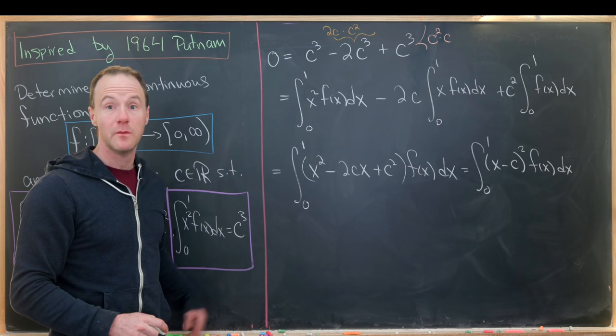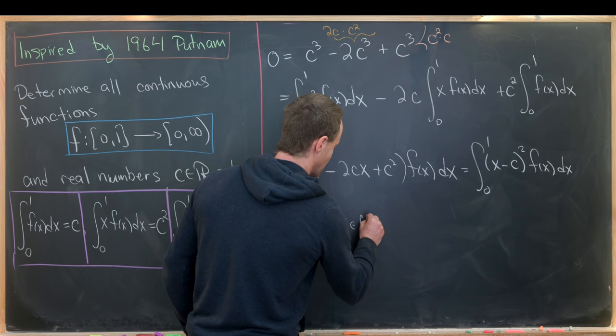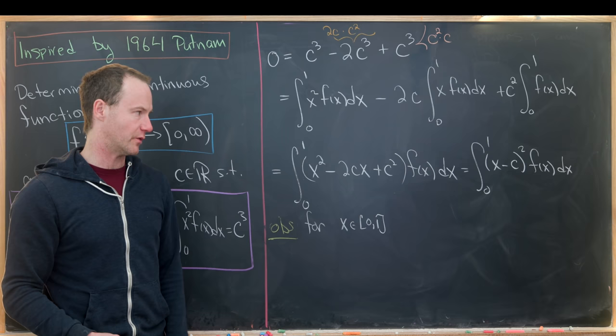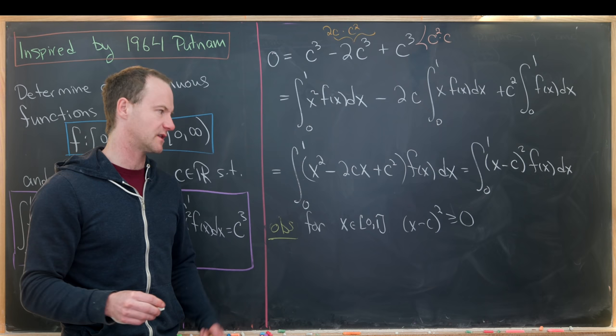But now we're actually almost done if we look at the following observation. So our observation is that for all x on the interval [0,1], that's the interval that we're integrating over. We have (x - c)² is bigger than or equal to 0. It could be 0 if c is on that interval, but likely it's never equal to 0. It's always non-negative because we have a square there.